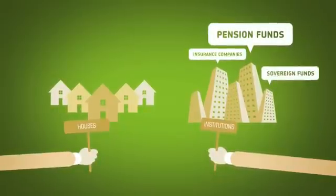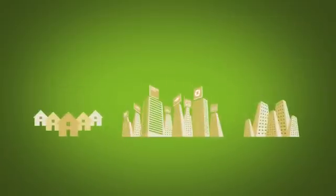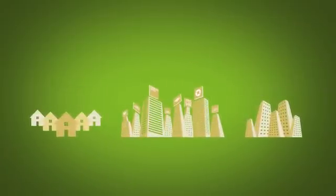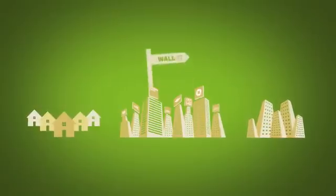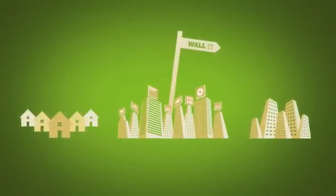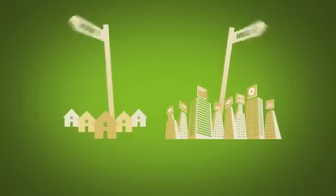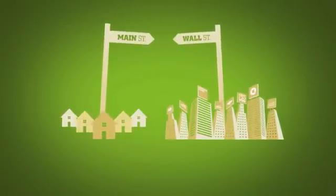insurance companies, sovereign funds, mutual funds, etc. These groups are brought together through the financial system, a bunch of banks and brokers commonly known as Wall Street. While it may not seem like it, these banks on Wall Street are closely connected to these houses on Main Street. To understand how, let's start at the beginning.